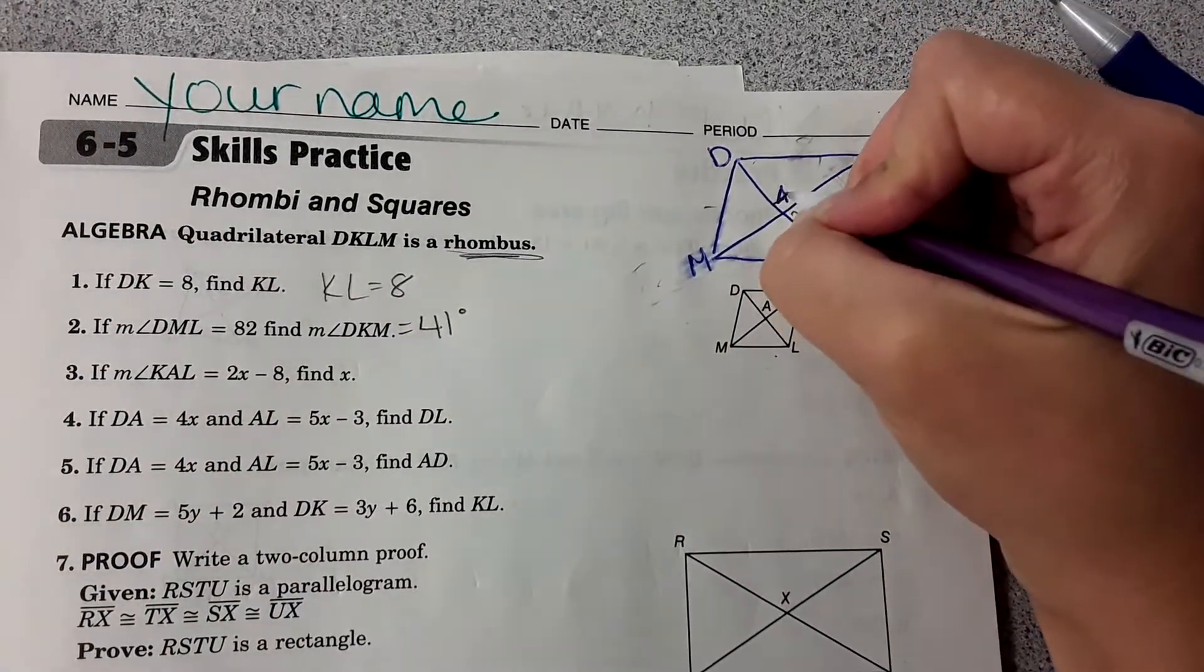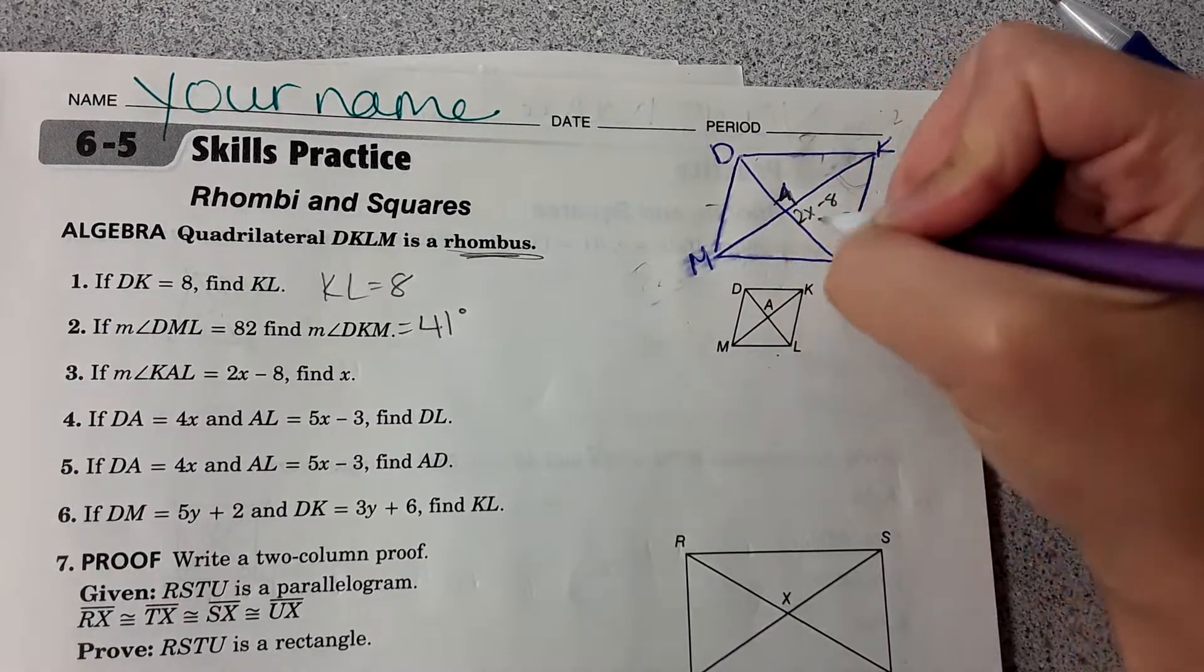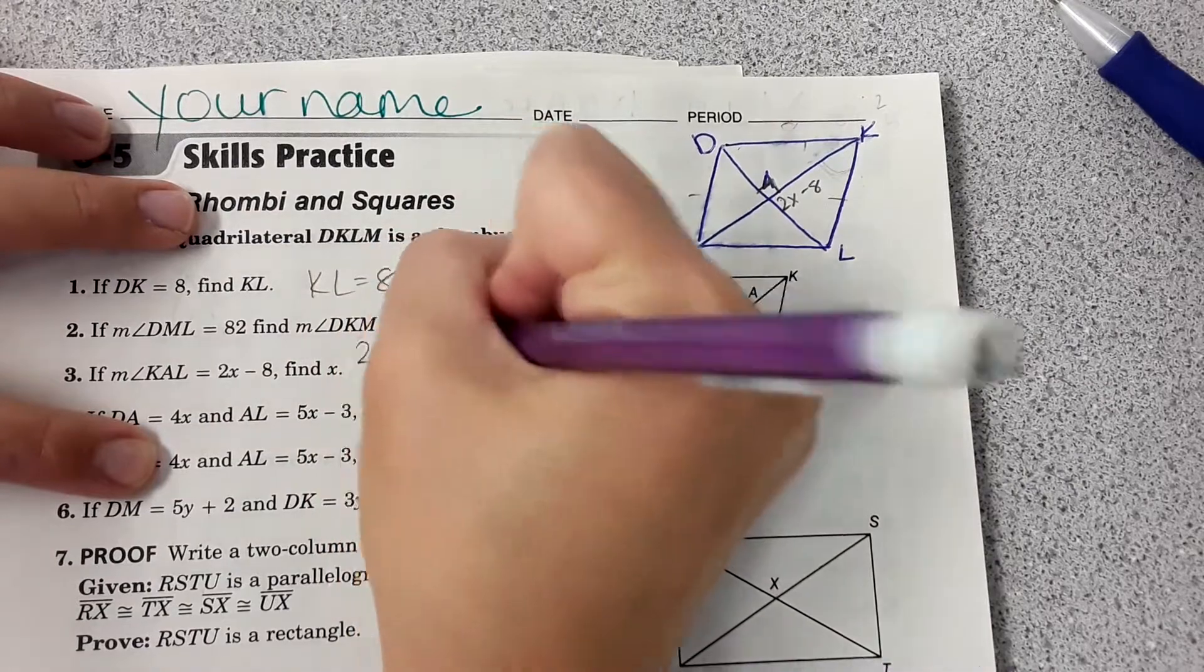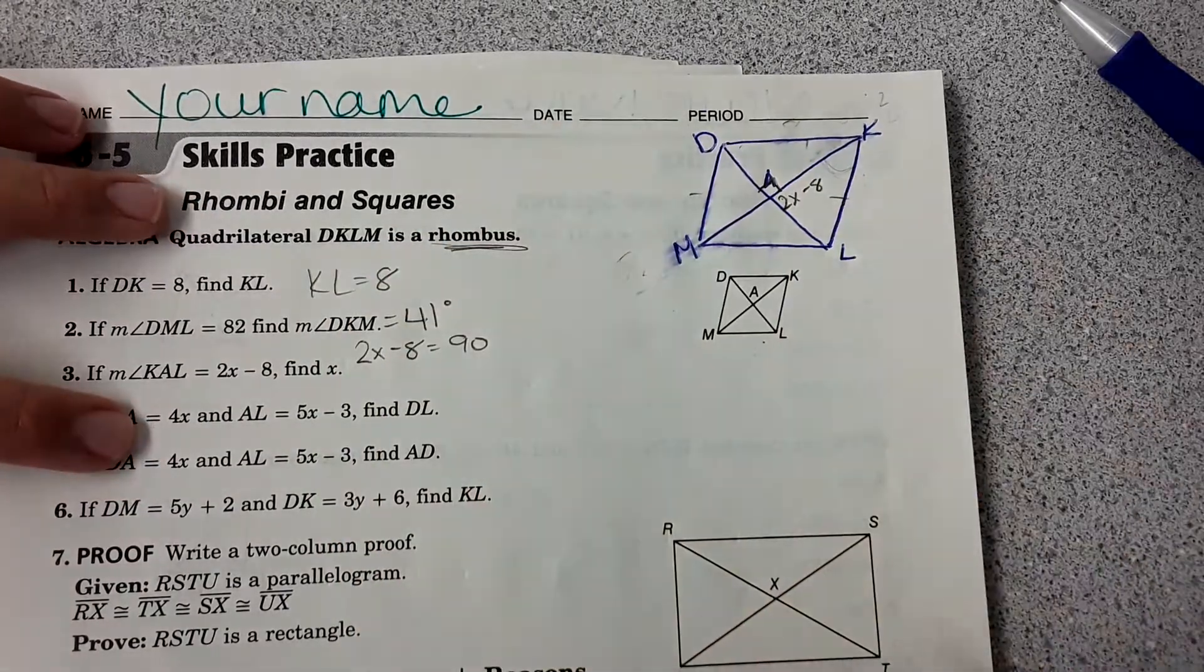In a rhombus, these diagonals are perpendicular. So this angle measure is equal to 90. So I can do 2x minus 8 equals 90 and solve for x.